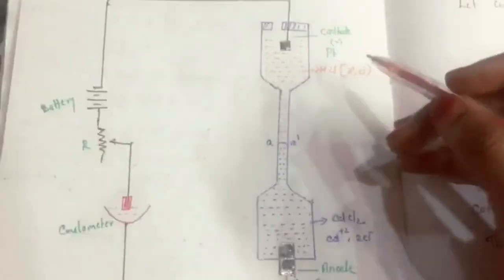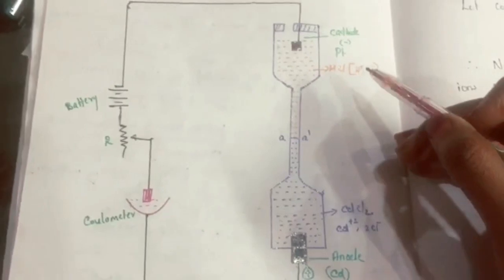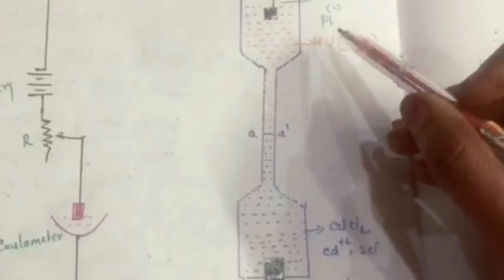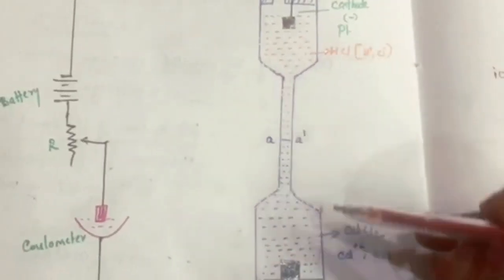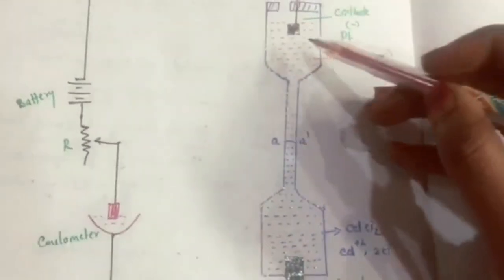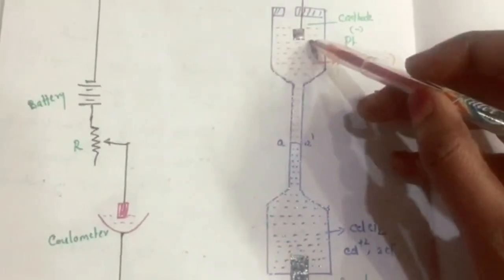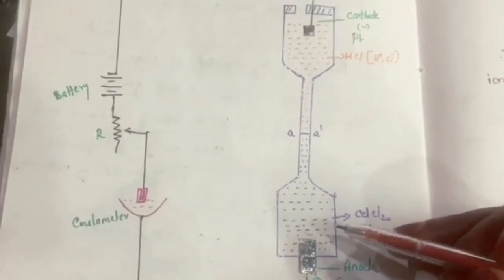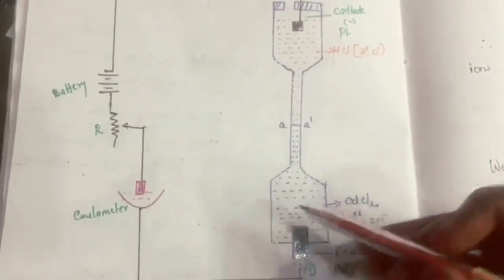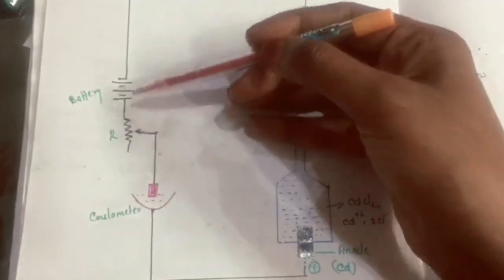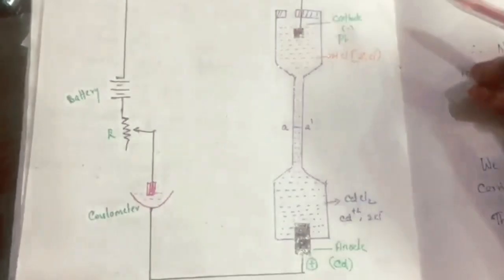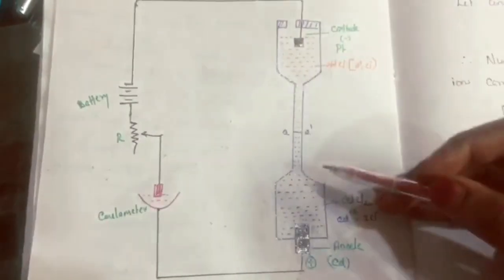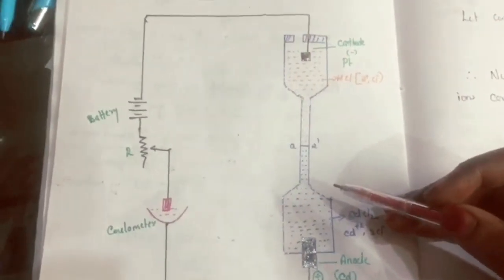This is the experimental setup for moving boundary method. The apparatus consists of a long vertical tube fitted with a platinum cathode at the top and cadmium anode at the bottom. It is connected to a coulometer, ammeter, and resistance. This long vertical tube contains the electrolytes.